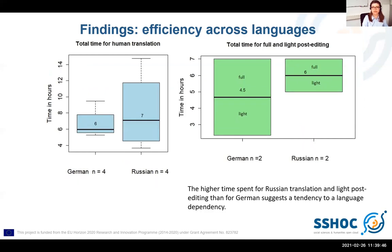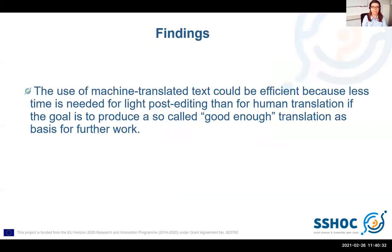If we take a look at efficiency across languages, the median time spent on Russian translation is about 7 hours and post-editing about 6 hours — almost the same. The difference in translation and post-editing for German is larger: 6 hours and 4.5 hours respectively. On the right side in green, Russian and German full post-editors spend the same amount of time on editing machine translated text. The overall higher time spent for Russian translation and post-editing than for German suggests a tendency toward language dependency.